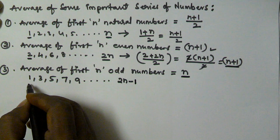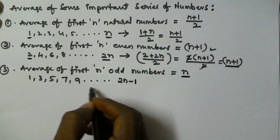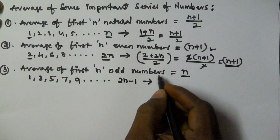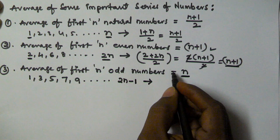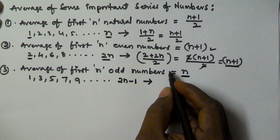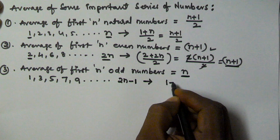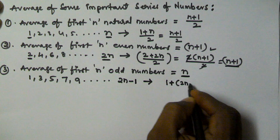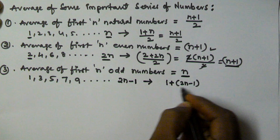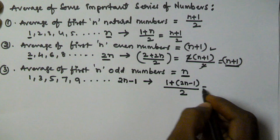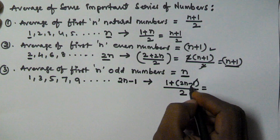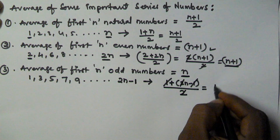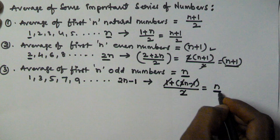The last odd number is 2n − 1. If you observe, this series is also in arithmetic progression. The average is given by (first + last) / 2, which is (1 + 2n − 1) / 2. The 1s cancel and the 2s cancel, giving n.